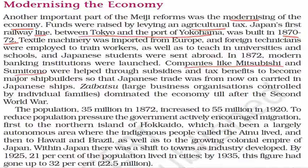Companies like Mitsubishi and Sumitomo were helped through subsidies and tax benefits to become major shipbuilders, so that Japanese trade was carried in Japanese ships. Zaibatsu — large business organizations controlled by individual families — dominated the economy until after the Second World War. The population of Japan was 35 million in 1872 and increased to 55 million in 1920. To reduce population pressure, the government actively encouraged migration to the northern islands of Hokkaido, and then to Hawaii and Brazil, as well as to Japan's growing colonial empire. Within Japan there was a shift to towns as industries developed; by 1925, 21 percent of the population lived in cities, rising to 32 percent by 1935.